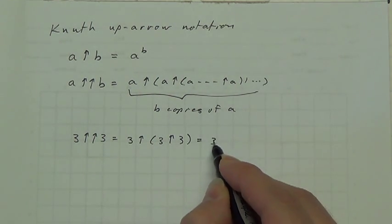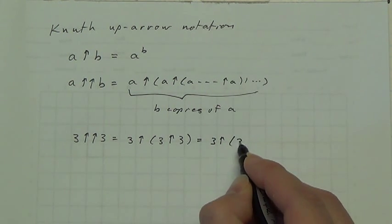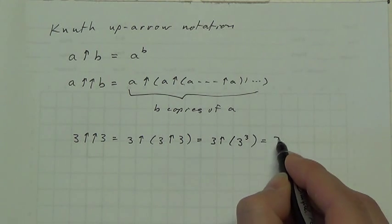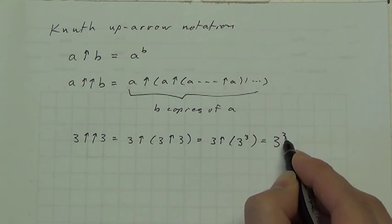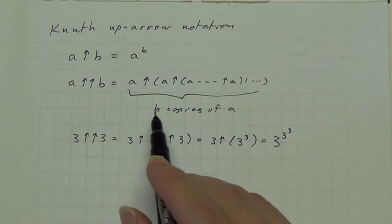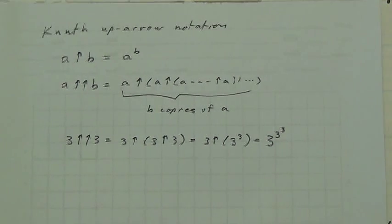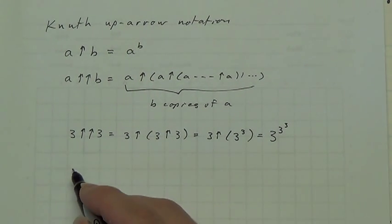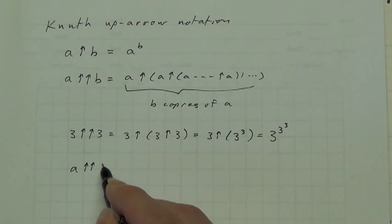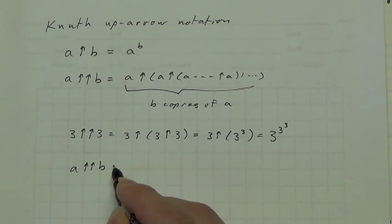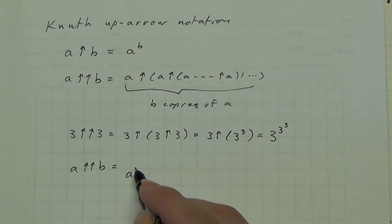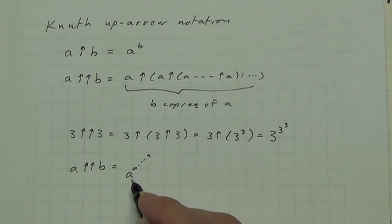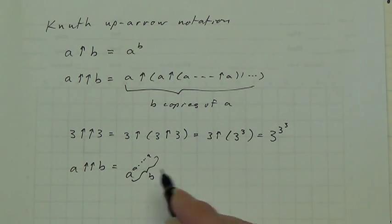So 3 double up-arrow 3 is 3 up-arrow 3 up-arrow 3, which is 3 raised to the 3 raised to the 3. A double up-arrow is the same as a power tower — A double up-arrow B is A raised to the A, raised to the A, B times.